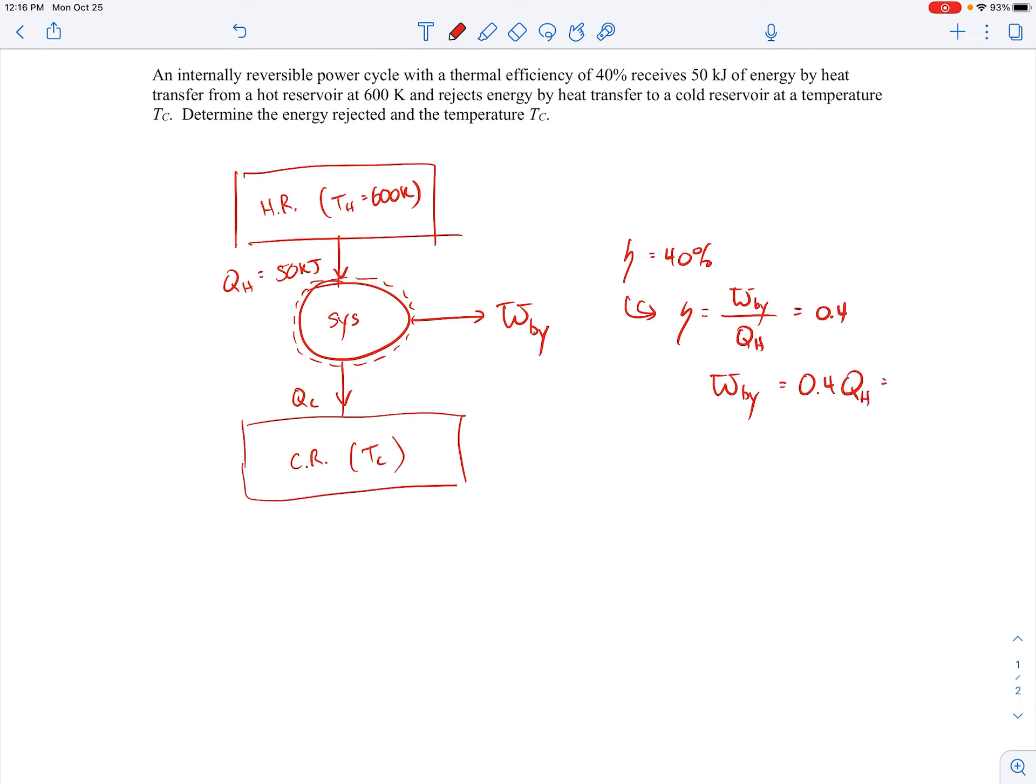So we can, that'll be the 0.4 times 50 KJ. So I think that comes out to be 20 KJ. So that's the power that we're getting out. And we're trying to find the power that's being rejected down here.